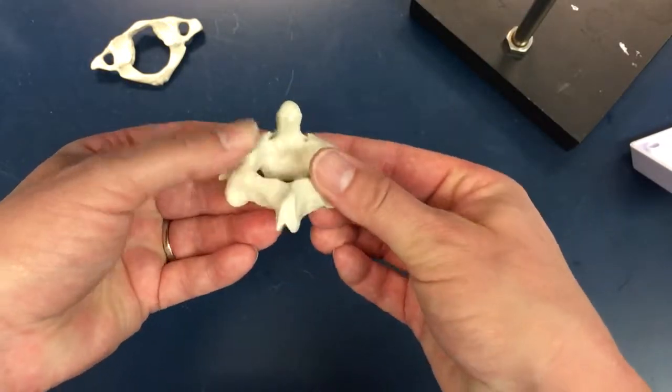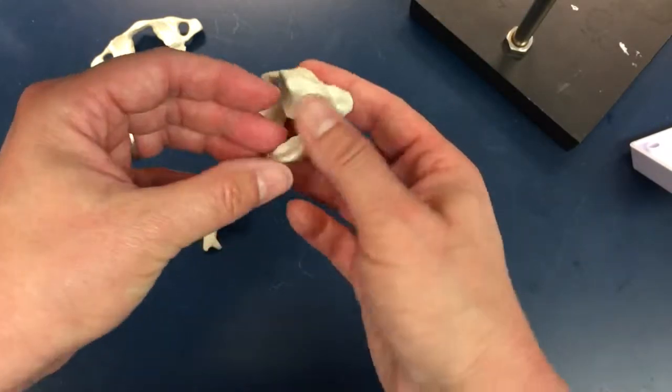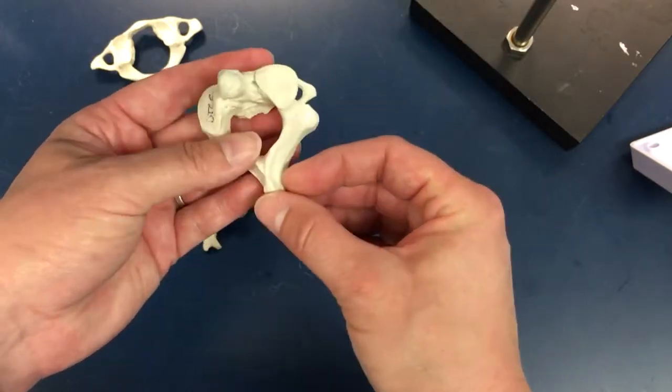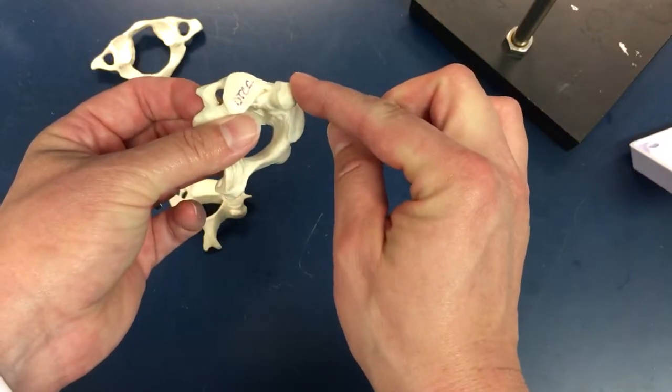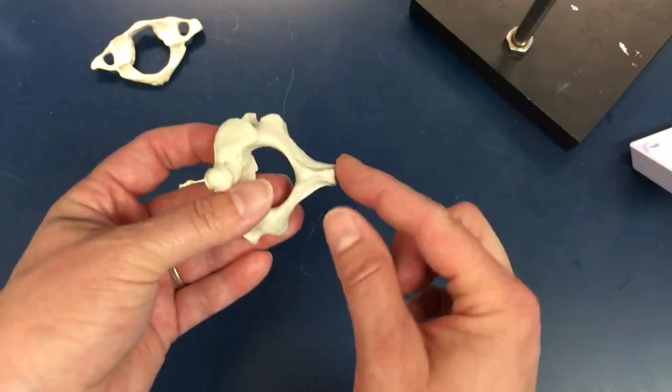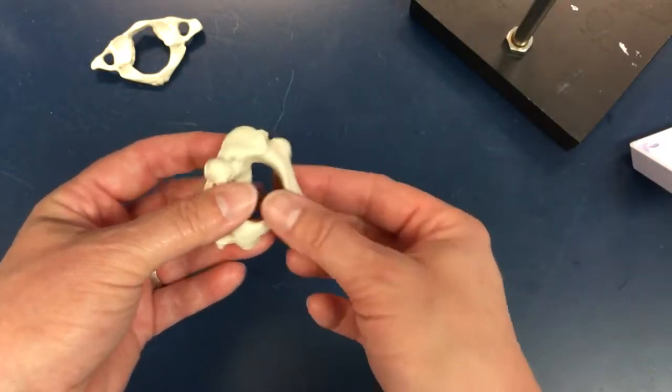The dens, or the odontoid process. This is C2 axis. You see transverse foramen, the dens also known as the odontoid process, and of course we have a spinous process there as well.